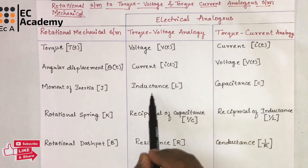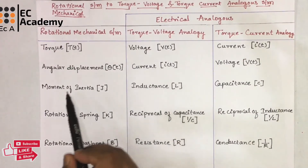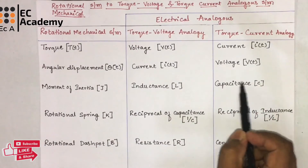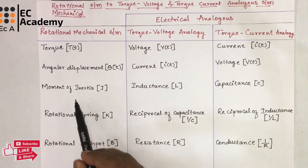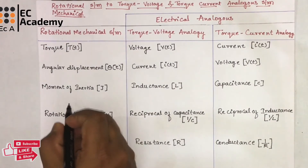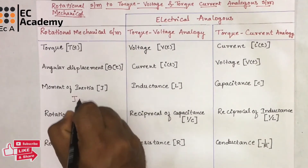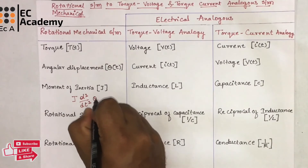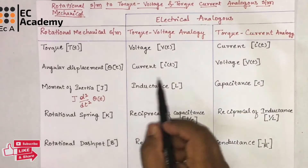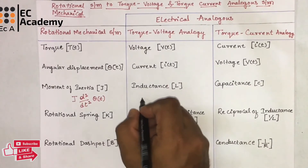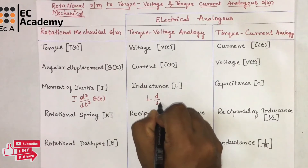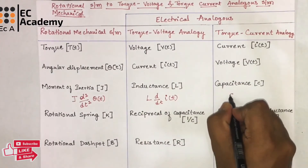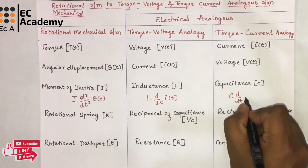While writing the torque voltage analogy, inductor is analogous to moment of inertia J. In torque current analogy, capacitor is analogous to moment of inertia. The differential equation for moment of inertia can be written as J d²θ/dt². In torque voltage analogy, we can write it as L d/dt of I(t). And in torque current analogy, we can write it as C d/dt of V(t).